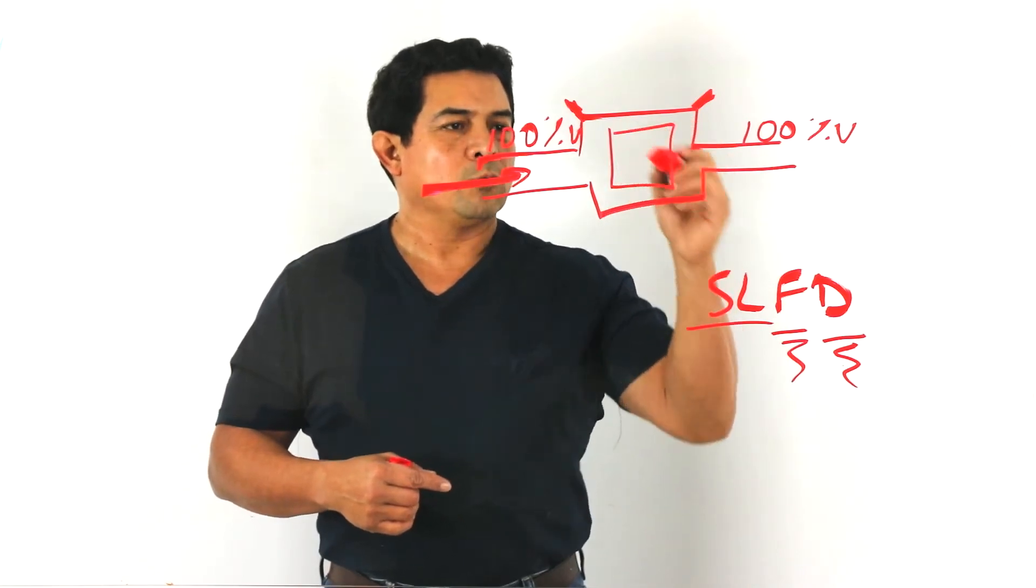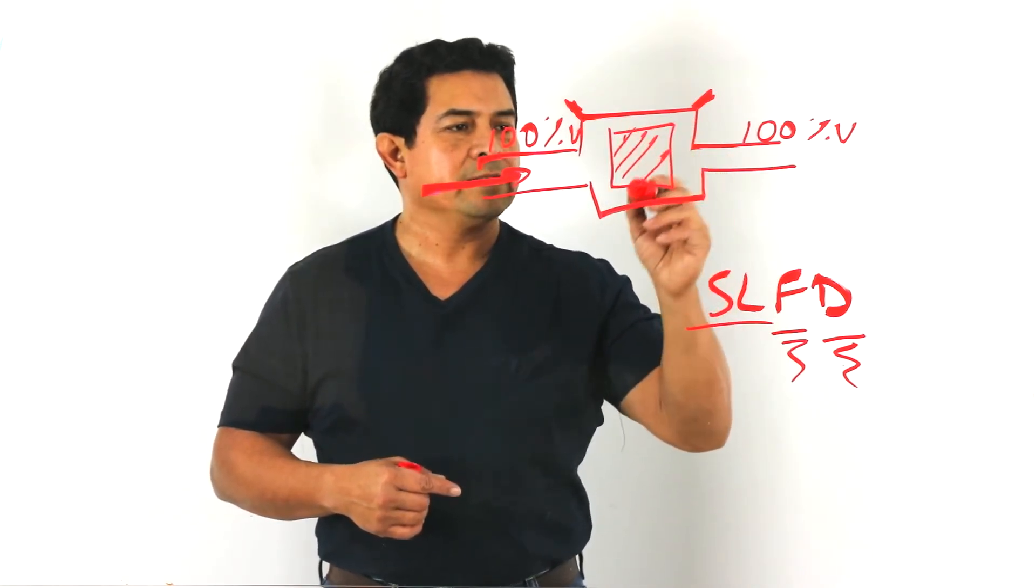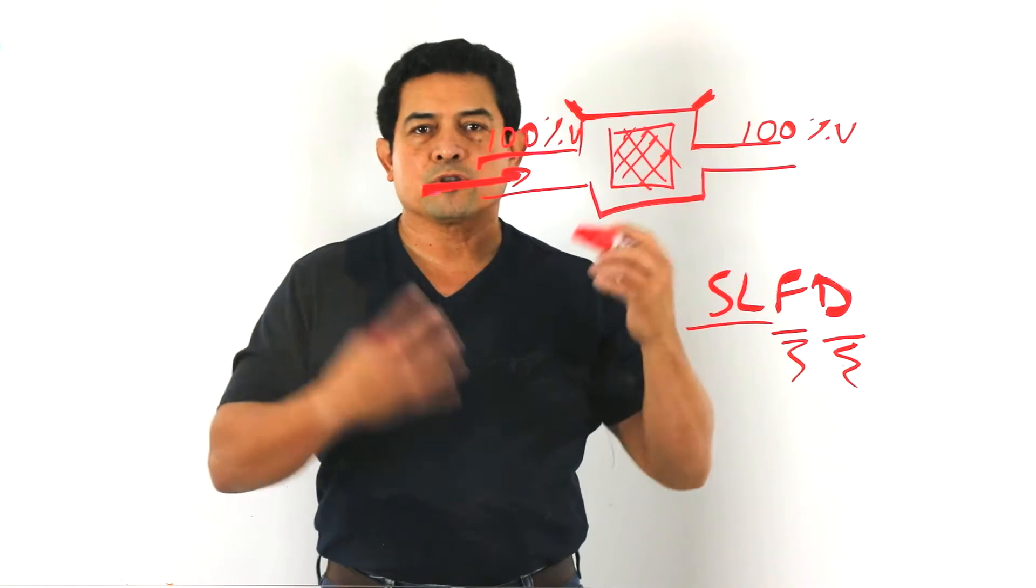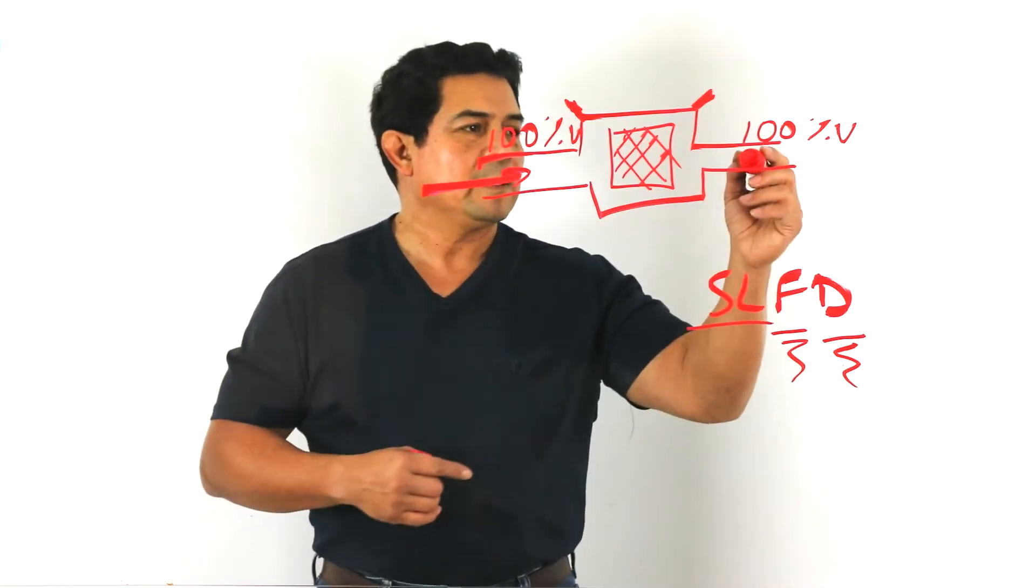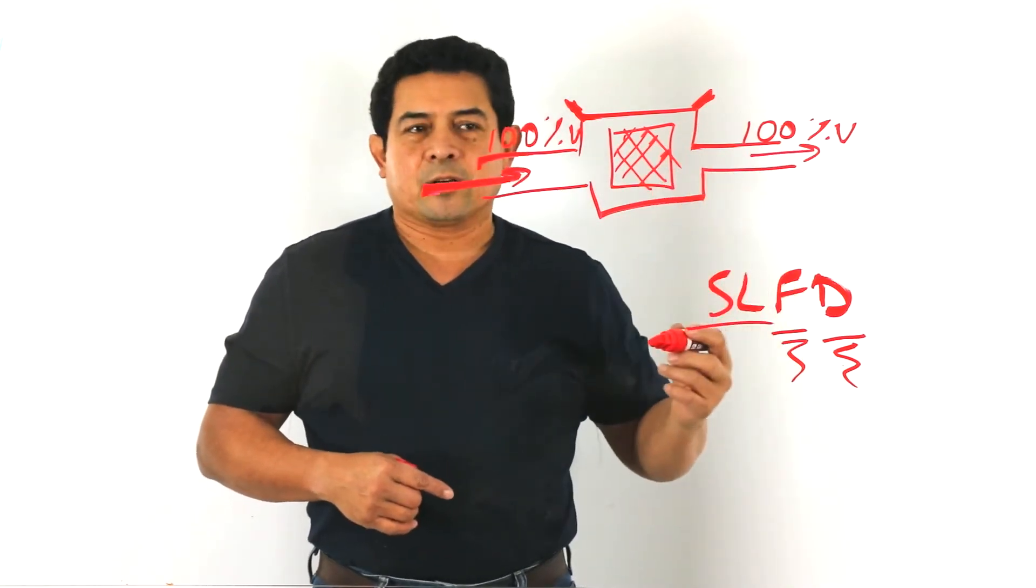In here, we're going to have the desiccant. We're going to have what's going to dry, what's going to trap the moisture. And like we said, that's going to go back out.